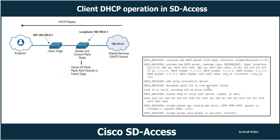This figure shows the flow of the DHCP request sent from the endpoint. The fabric edge switch intercepts the request and adds Option 82 containing the Instance ID (for example 4099) and its RLOC address, then changes the source of the DHCP request to its SVI address and sends the packet toward the fabric border in the overlay. The sample debug output captured on the fabric edge shows: receiving a new DHCP packet on the input interface, processing it, adding the relay information Option 82 in VLAN mode port format, then forwarding it to the DHCP server.